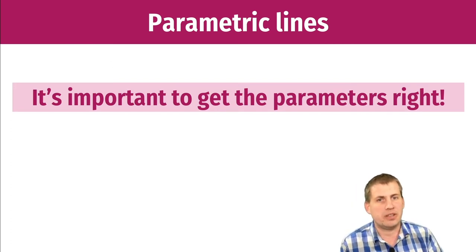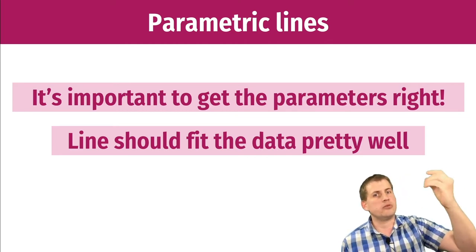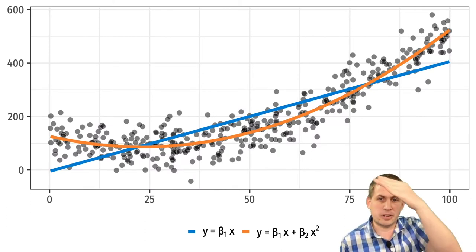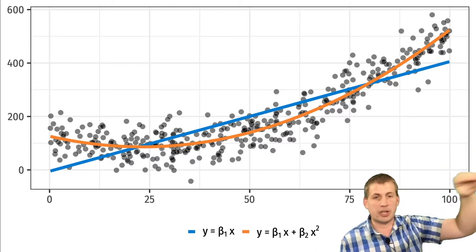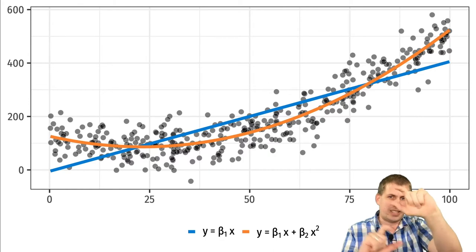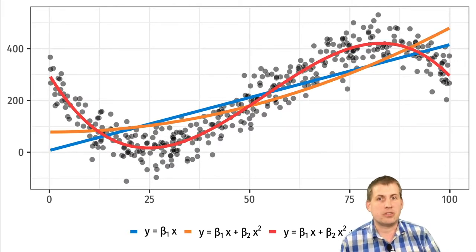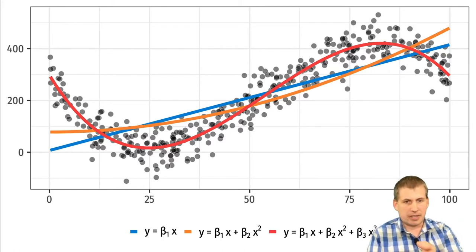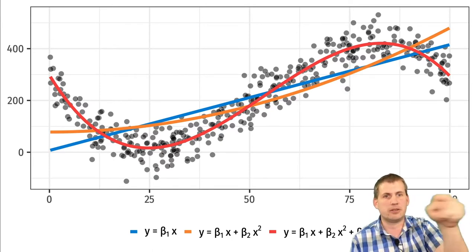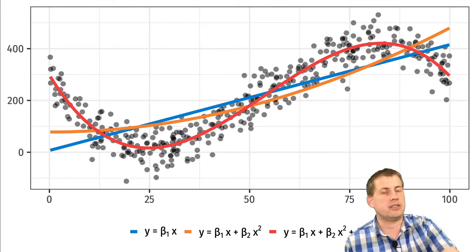It's important to get the parametric line right so it fits the data. If the data is curvy, don't try to fit it with a straight line because it won't work. In this example, the orange line is curvy and fits the data well; using the blue straight line would cause incorrect results because it doesn't fit the data on either side of the cutoff. Similarly, if you have very curvy data you can run a regression with x³, and that gives you the right curve. Using x² or just x when x³ is needed won't fit the data well and won't give you a good gap size.